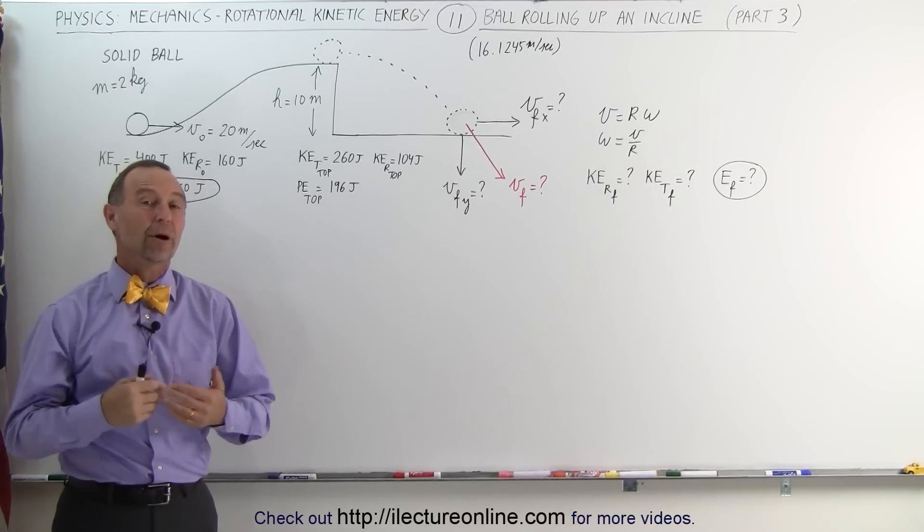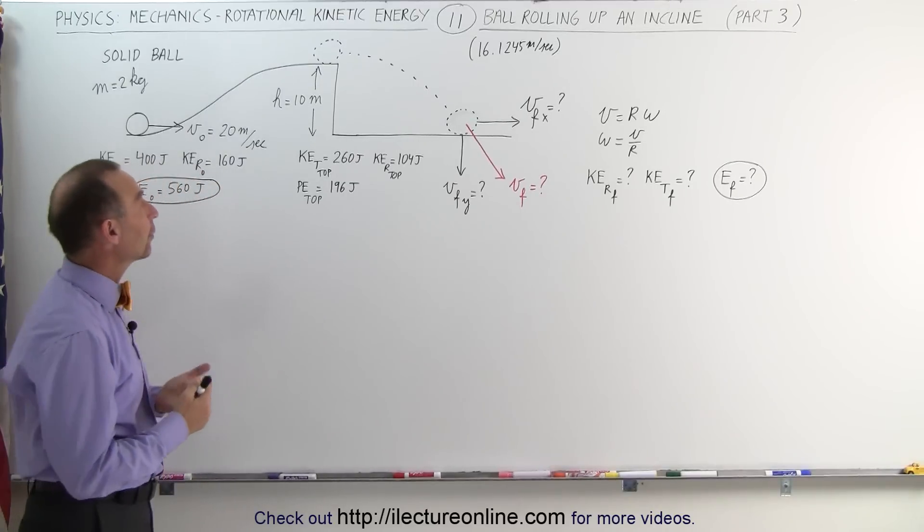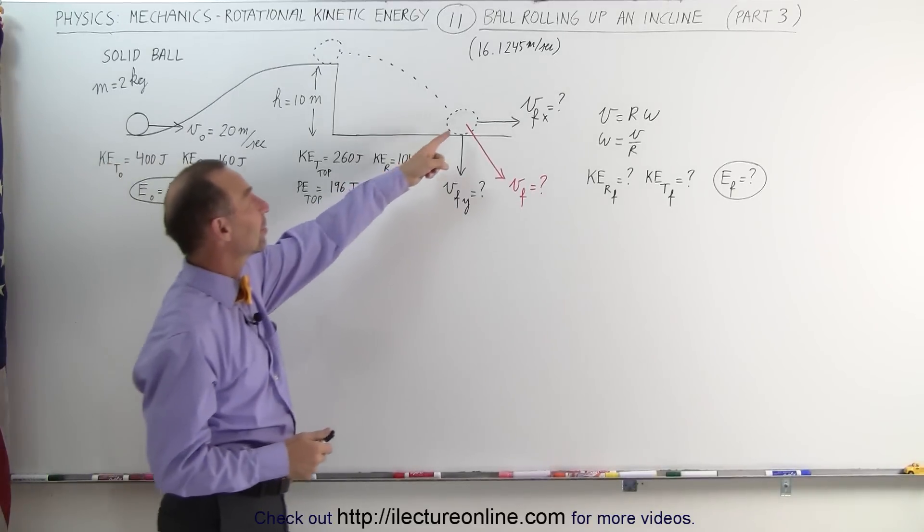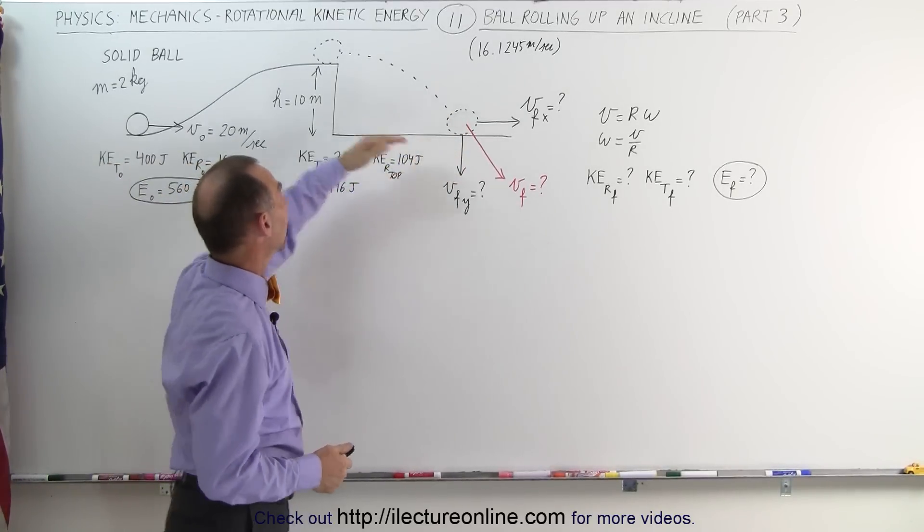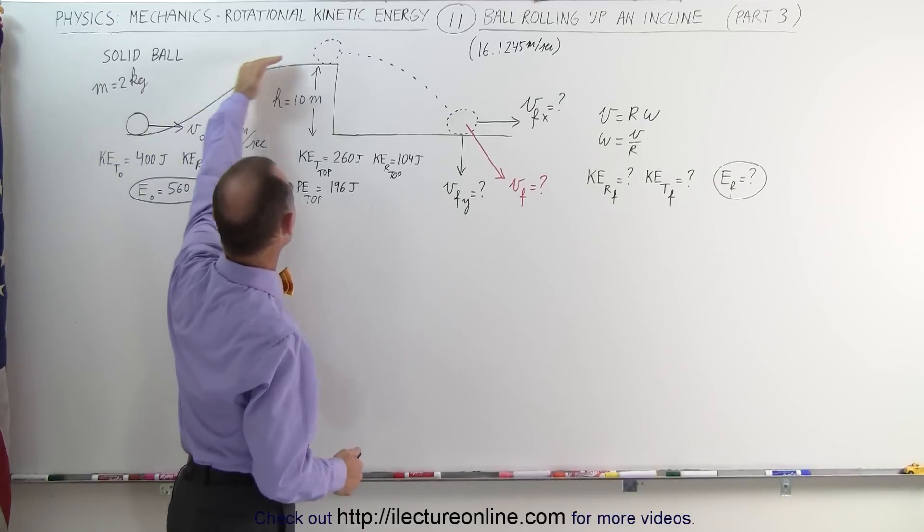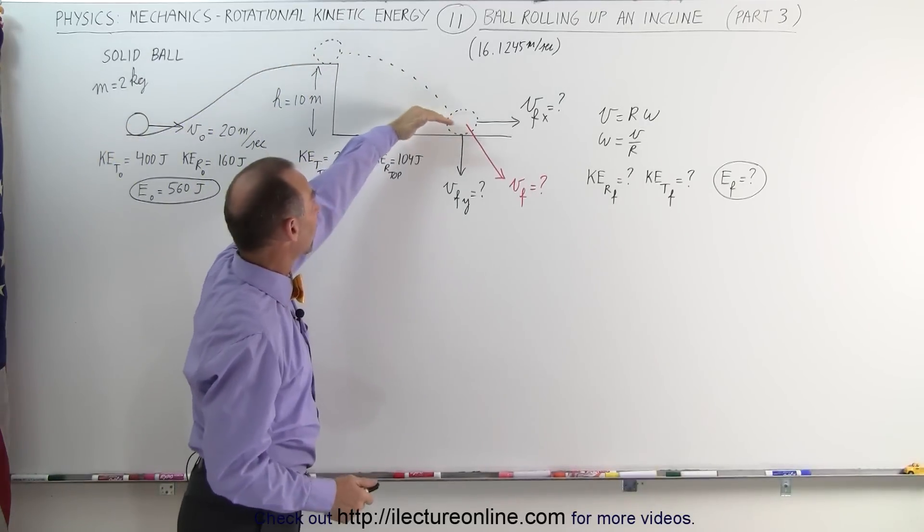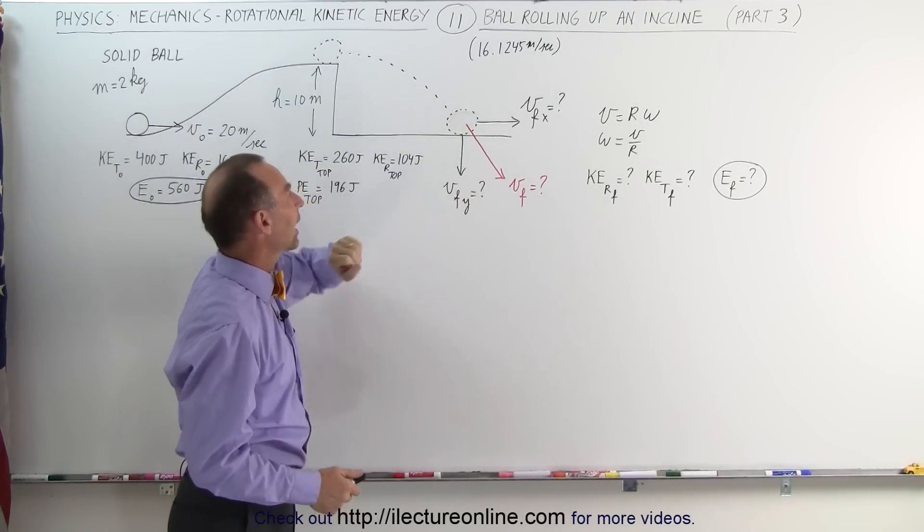Welcome to ilectureonline. Here's part three to that problem. Now we're going to try to find the velocity at the bottom of the hill after the ball rolls up the incline and then goes off the cliff and eventually hits the bottom again.